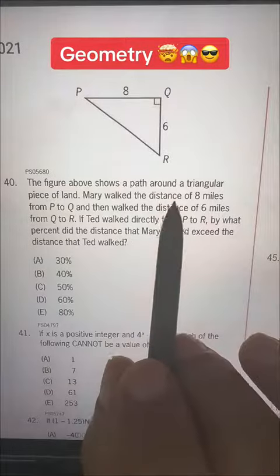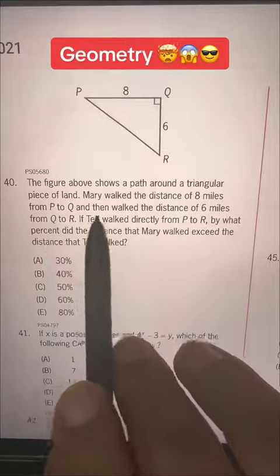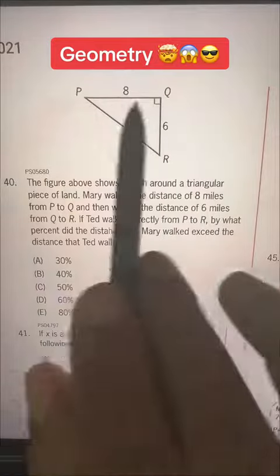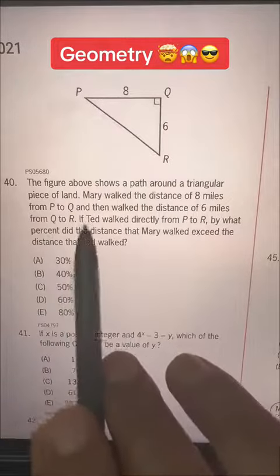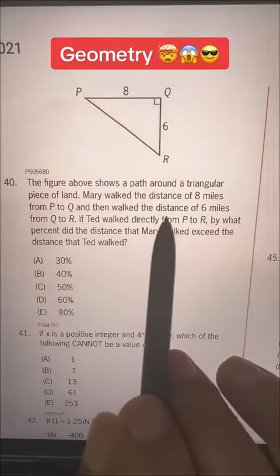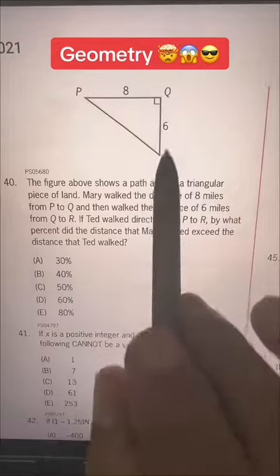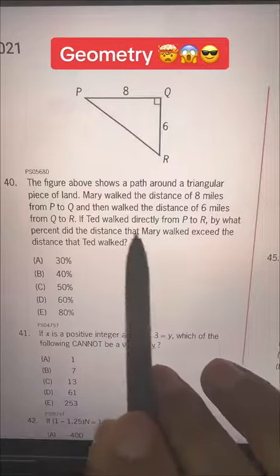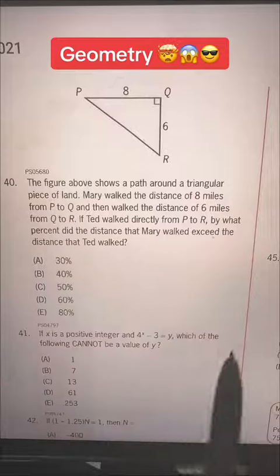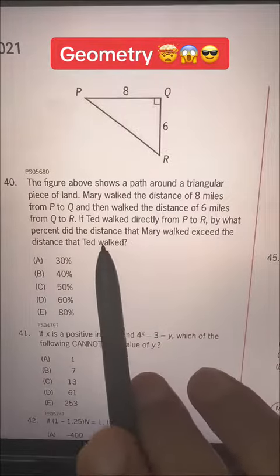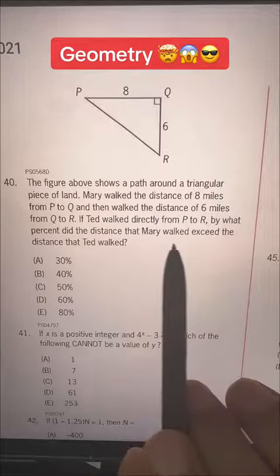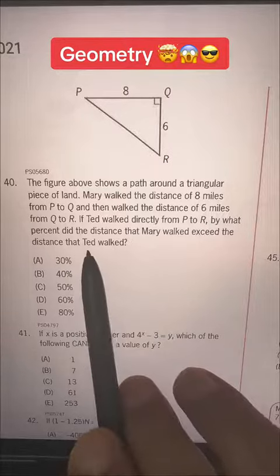The figure above shows a path around a triangular piece of land. Mary walked the distance of 8 miles from P to Q and then walked the distance of 6 miles from Q to R. If Ted walked directly from P to R, by what percent did the distance that Mary walked exceed the distance that Ted walked?